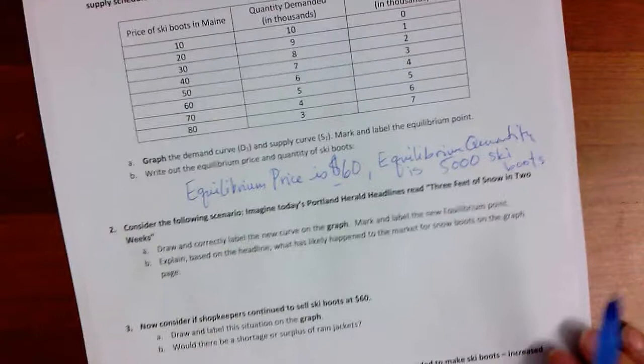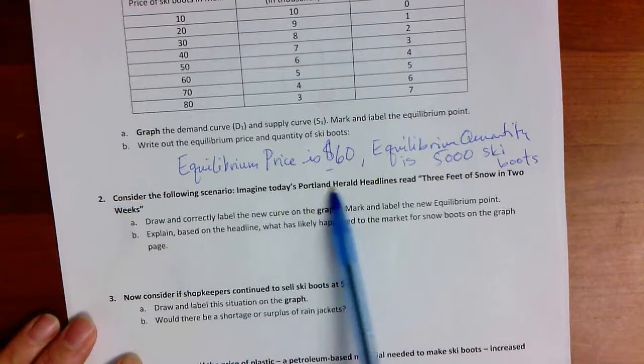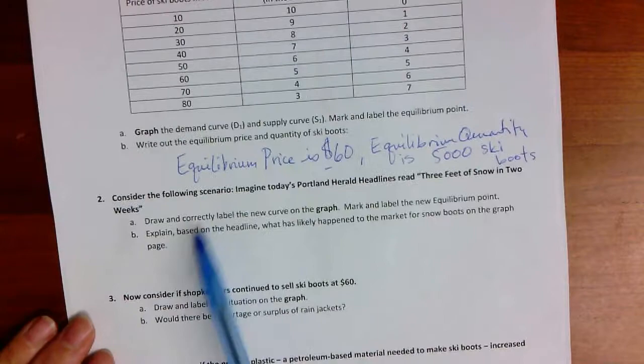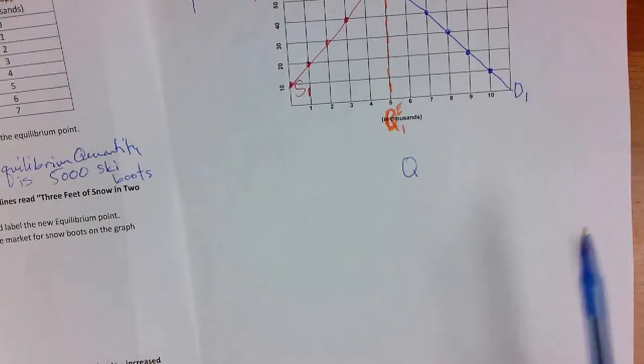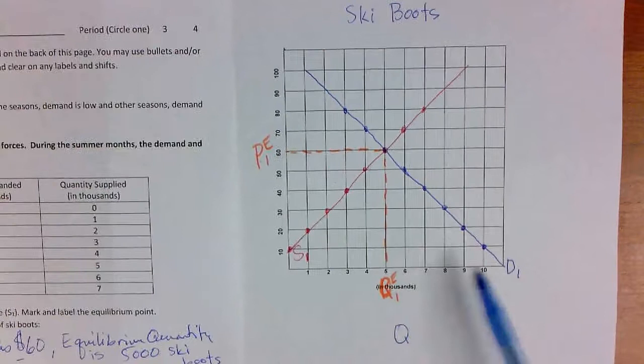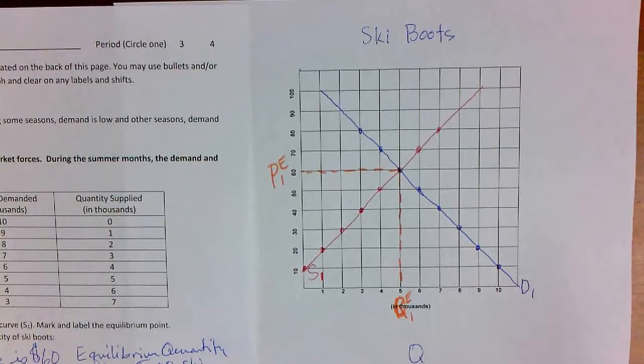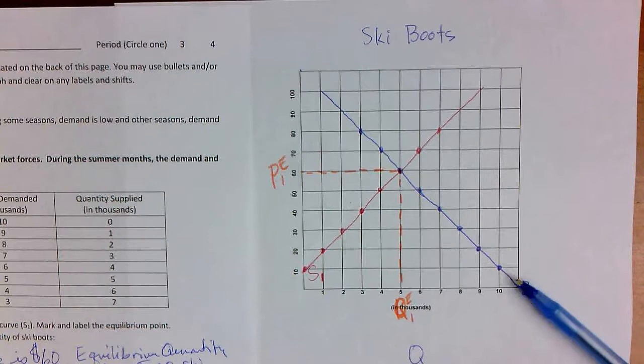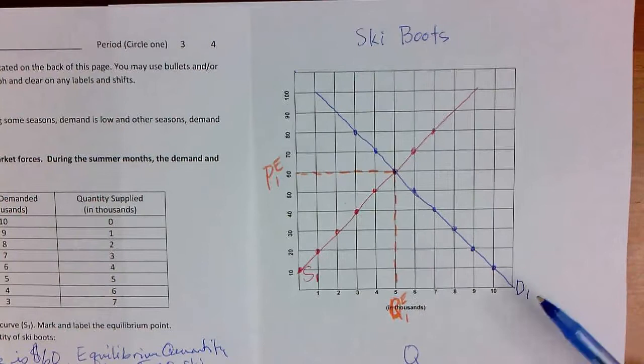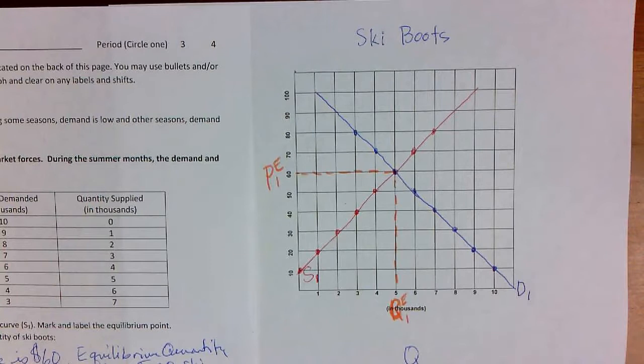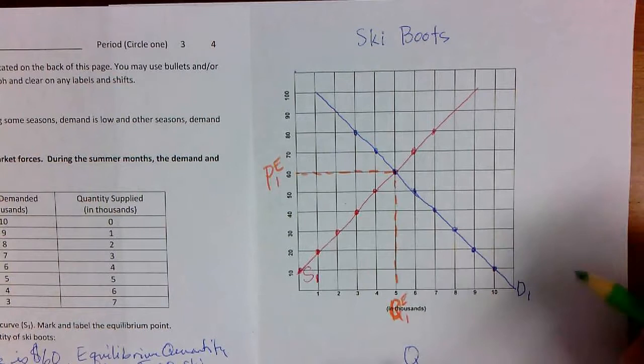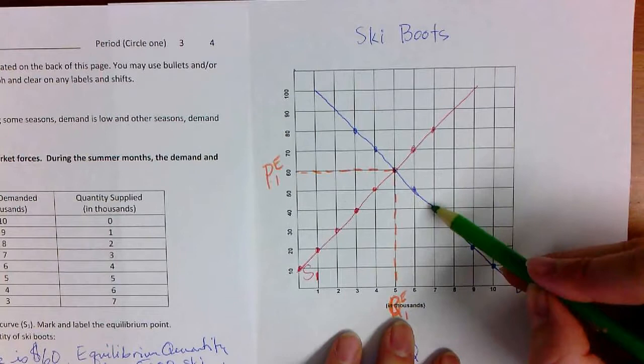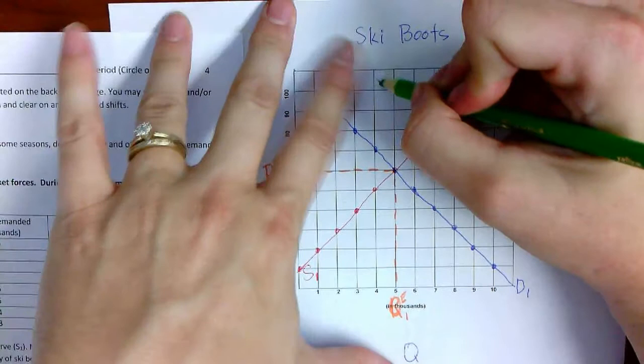Now we're ready to move on to the next step and see what happens to the market. Consider the following scenario. Imagine today's Portland, Maine Herald's headlines read, three feet of snow in two weeks. Now, what's that going to do? Three feet of snow, all of a sudden, what's that going to do to ski boots? Who is going to get excited about that snow? Well, skiers are going to get excited about that snow. The weather has changed. Now, their tastes are changed. In the summertime, they don't care about ski boots. They don't need their ski boots. That's not part of their tastes or attitudes. They're not thinking about those ski boots, unless they're professionals. But now that the snow is falling, all of a sudden, their attitude about ski boots changes. And so, demand is going to shift what direction? It's going to shift to the right. It's going to increase.